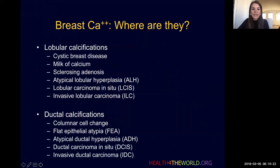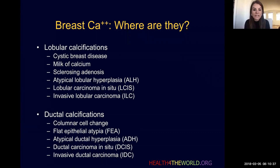Calcifications can occur in the lobules within the breast. Several benign processes occur within the lobules, such as cystic breast disease, milk of calcium, and sclerosing adenosis. Atypical or high-risk lesions can also occur within the lobules that present as calcifications, including atypical lobular hyperplasia and lobular carcinoma in situ. Malignant calcifications can also occur in the lobules, as is the case for invasive lobular carcinoma.